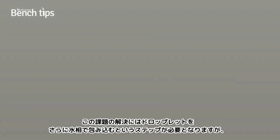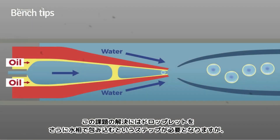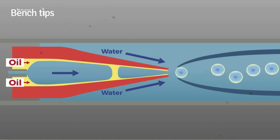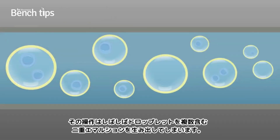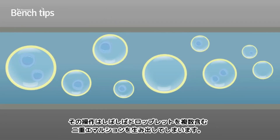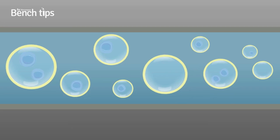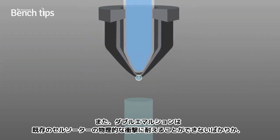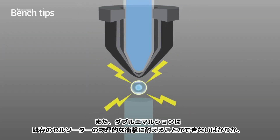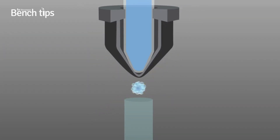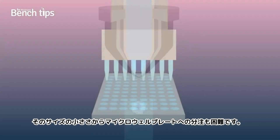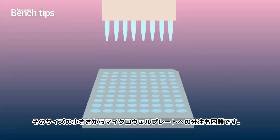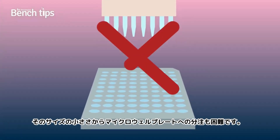To address this, the micro droplets must be encapsulated in a second aqueous phase, which often results in a highly polydispersed double emulsion. Not only are such preparations unable to withstand the physical shock of conventional cell sorting, but the droplets cannot be easily dispensed into microplates due to their small size.